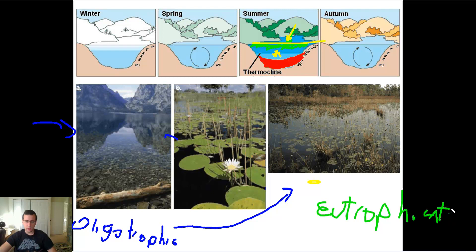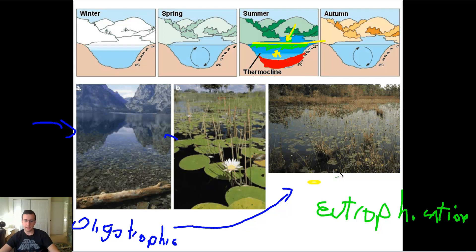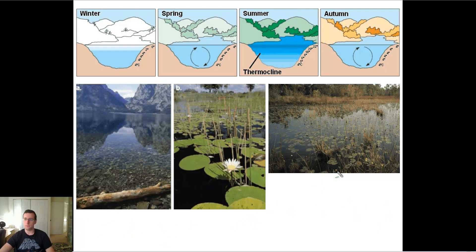This last stage is the death of the lake — the lake will not be able to maintain its life for very much longer. The name for that process is eutrophication. When you reach a true eutrophic lake, it's pretty much a dead lake unless more water gets added or the nutrients are somehow removed.